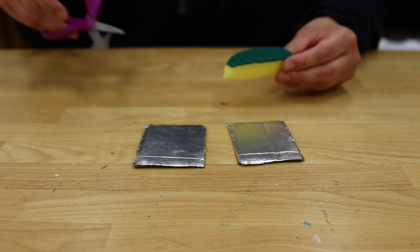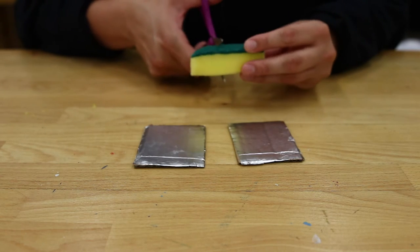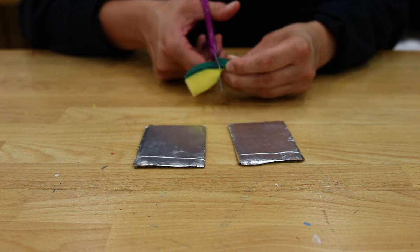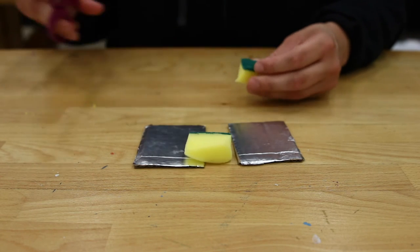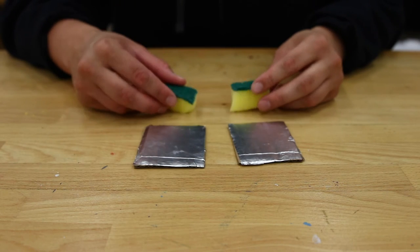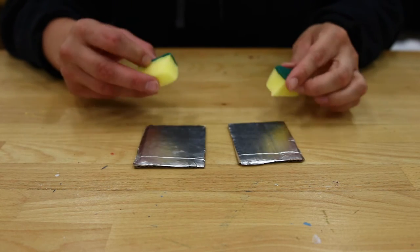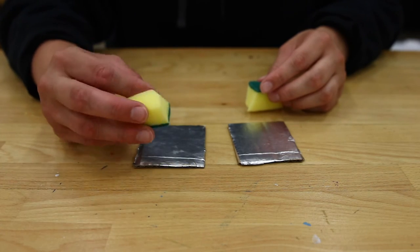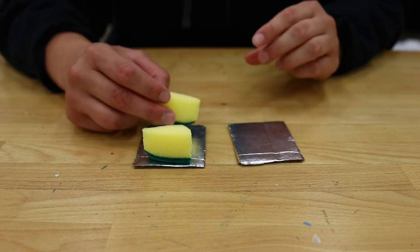Now grab your sponge and a pair of scissors. Carefully cut your sponge in half. Place those two smaller pieces of sponge on top of one of your pieces of cardboard. Make sure that the sponge is sitting on the side with the aluminum foil.